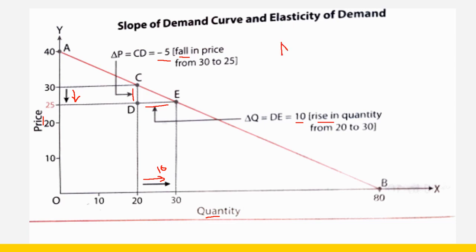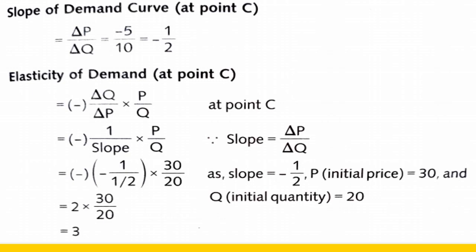So what is the slope of demand curve? Slope of demand curve is delta P divided by delta Q. Delta P is minus 5 divided by delta Q which is 10, so the answer is minus 1 by 2. This is the slope of demand curve at point C. Change in price is minus 5 because there is a fall in price; change in quantity demanded is plus 10 because there is an increase in quantity demanded.